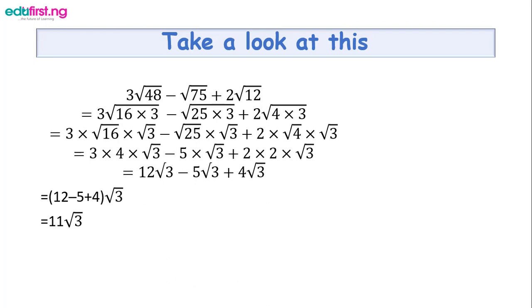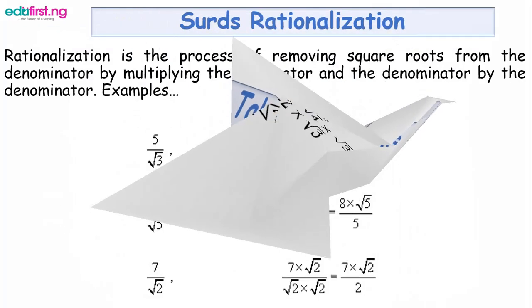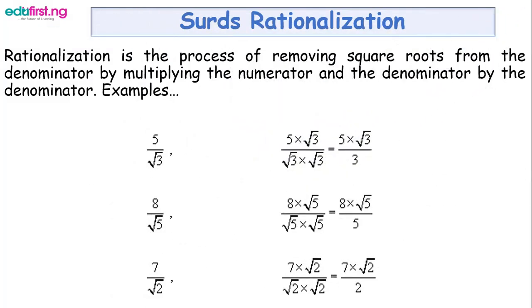Now we have what we call surd rationalization. Rationalization is the process of removing the square root from the denominator. What you do is multiply both the numerator and the denominator by the denominator. For example, 5 over root 3: multiply numerator and denominator by root 3, giving 5 root 3 over root 3 times root 3. Root 3 times root 3 gives 3, so the answer is 5 root 3 over 3.